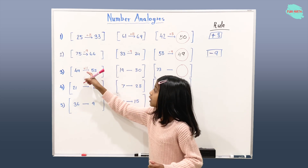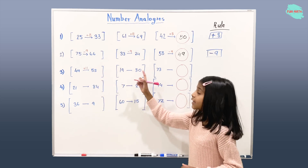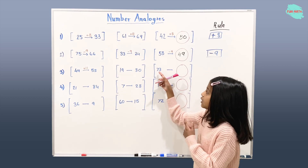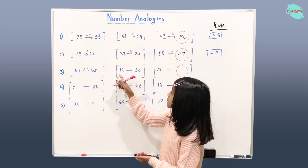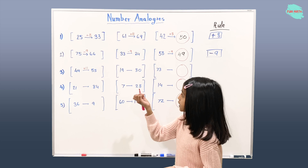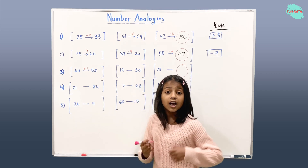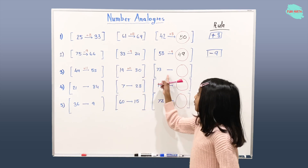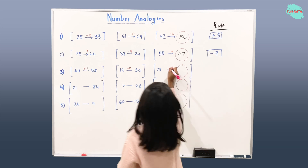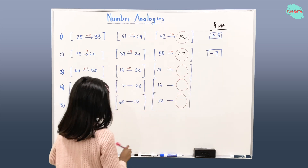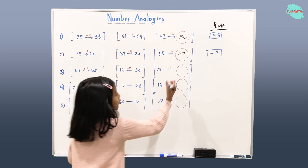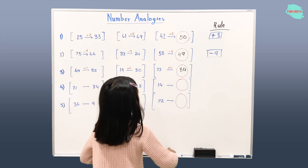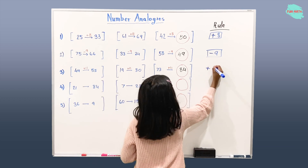So we're going to apply plus 11 over here in this group. If it works, we're going to apply that rule — plus 11 — by 73 plus 11. Is 19 plus 11 equal to 30? Correct. So that means we're going to apply plus 11, that rule over here: 73 plus 11 gives us 84. The rule is plus 11.